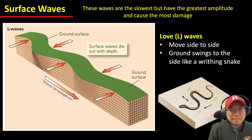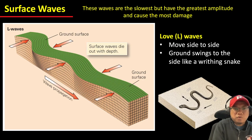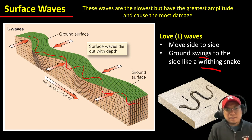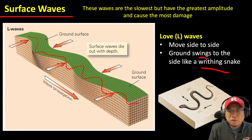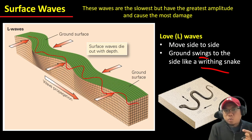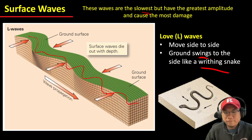The last example of a seismic wave is called L waves, or love waves. Love waves move side to side like a snake — the ground basically swings to the side. Both L and R waves travel very slowly, and they are the slowest compared to the two types of body waves.